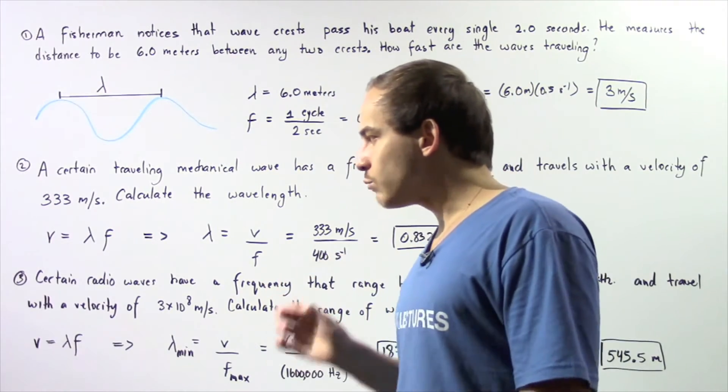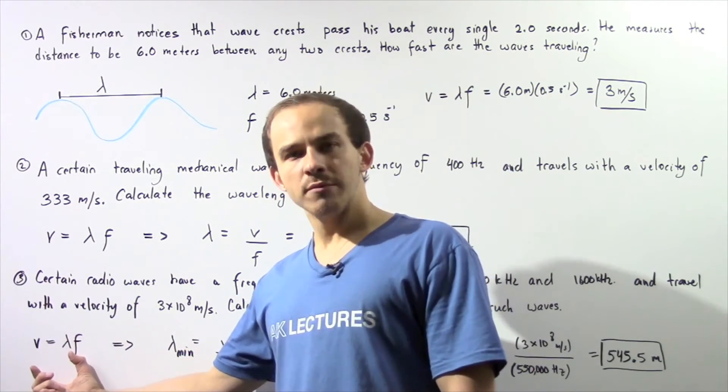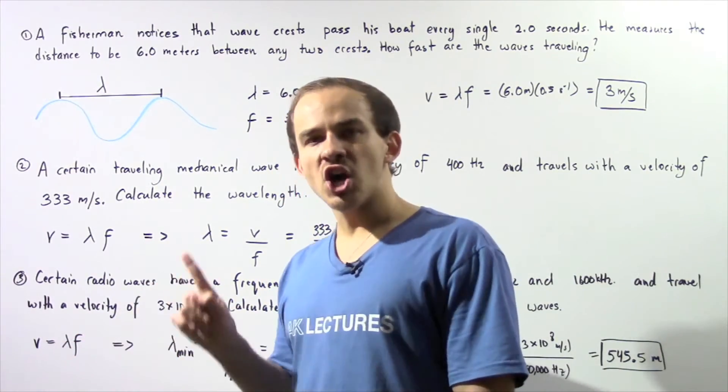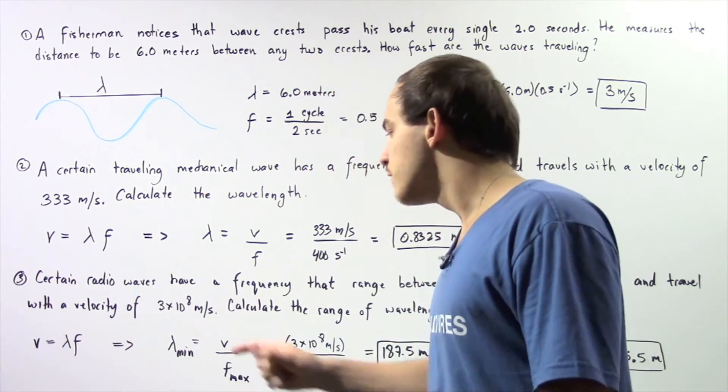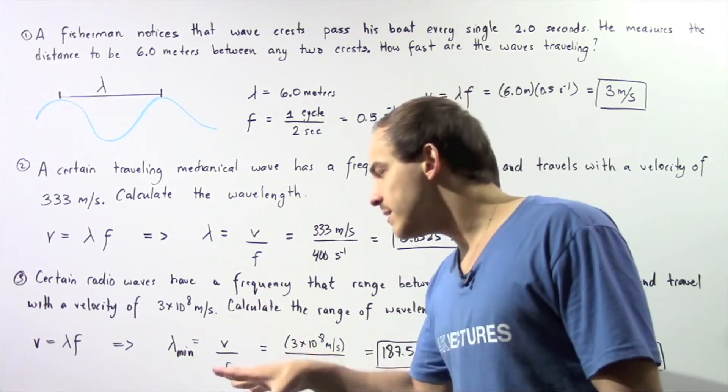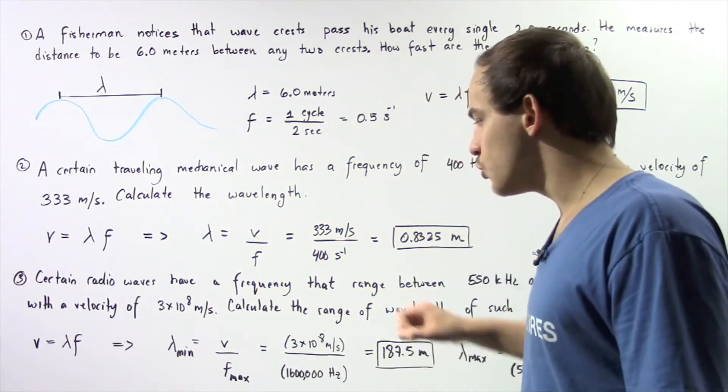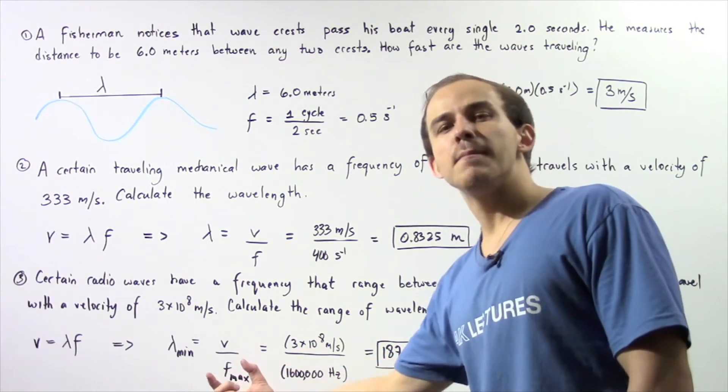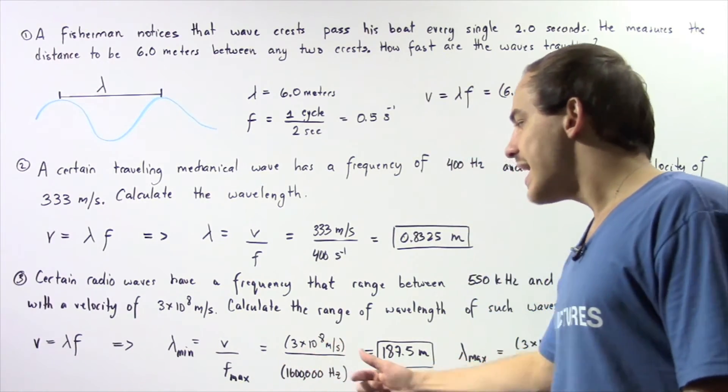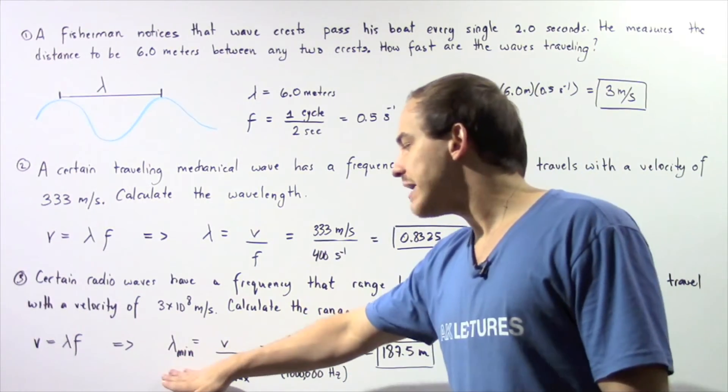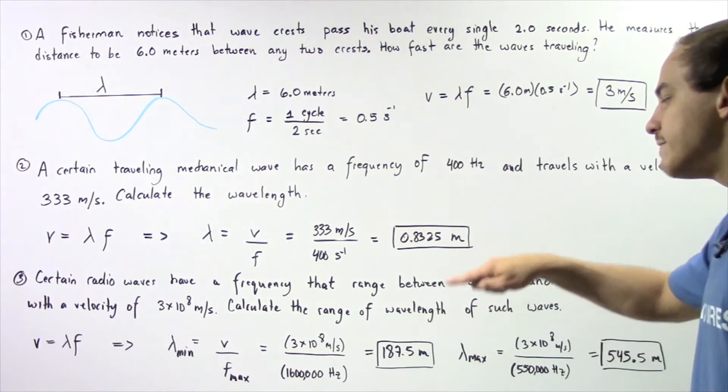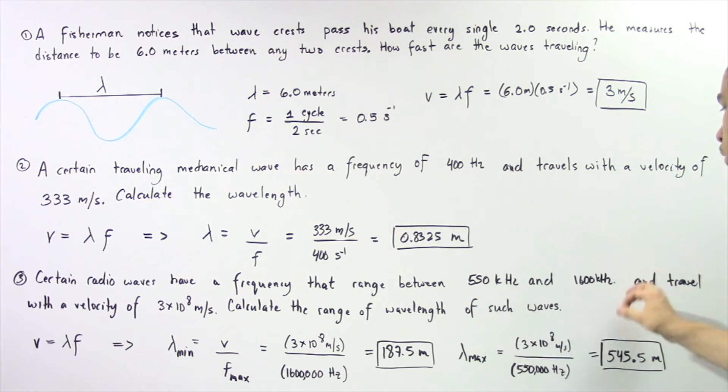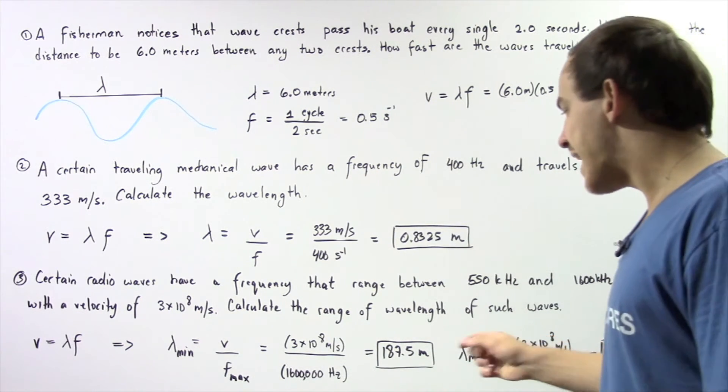Let's begin by once again recalling that we need to use the following formula. Because we want to find the wavelength and we know the frequency and velocity. So if we rearrange this equation, we can solve for the range of wavelength values. So the minimum wavelength value is equal to the velocity which is constant divided by the maximum frequency. Notice that as the frequency increases, the wavelength decreases. So velocity is 3 times 10 to the 8 meters per second divided by the largest frequency, 1600 multiplied by 1000 to convert from kilohertz to hertz.